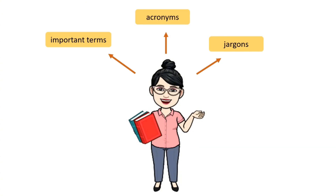Definition of terms is important because the important terms, acronyms, and jargons are clarified and clearly defined for the readers of the paper. Possibly, your readers may stop reading your research paper or will get easily confused when they encounter unfamiliar words or unclear ideas. To avoid this, you need to hone your skills in giving the technical and operational definition in research.